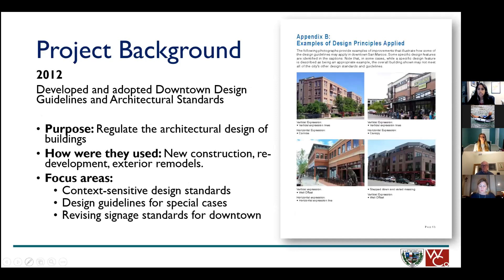To set the stage for how we got here: we first began our downtown design journey in San Marcos by adopting design guidelines and architectural standards in 2012. The purpose was to regulate the architectural design — the look and feel — of buildings in our downtown. These standards are used when new construction, redevelopment, or exterior remodels occur within the downtown area. They are context-specific, meaning standards may look different in different parts of downtown, and they created guidelines for special cases where an applicant might want to request something unique.